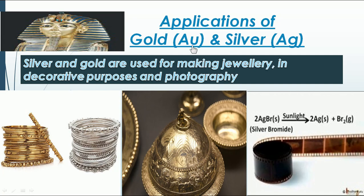Application of gold and silver: silver and gold are again coinage metals, so we can make coins out of them. They are mainly used in jewels — you can see silver and gold bangles. They are also used in decorative items and statues.